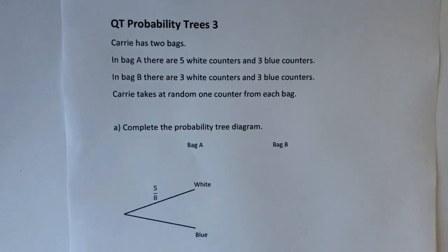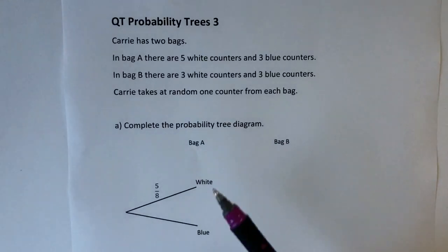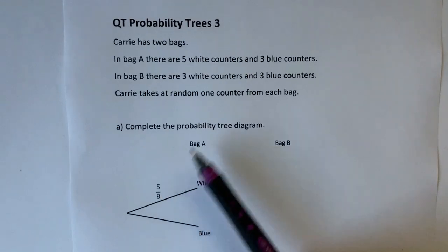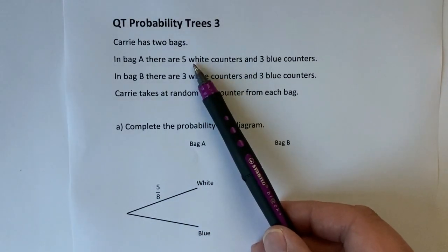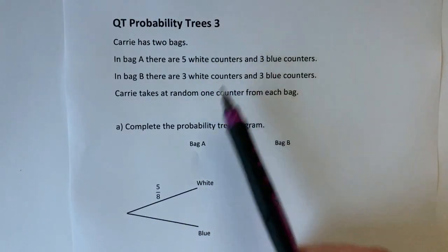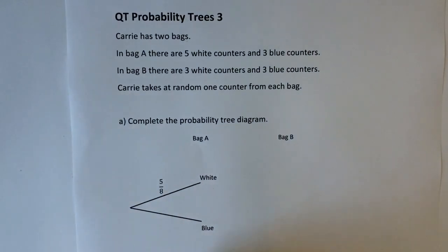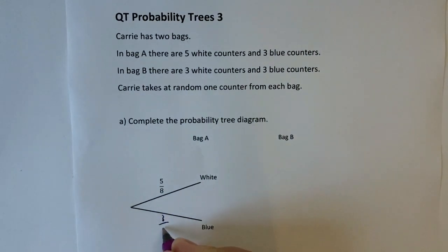Very helpfully it already tells us that the probability of white is five out of eight. That's correct - there's five white and eight counters altogether. Therefore the probability of blue must be three out of eight counters altogether.